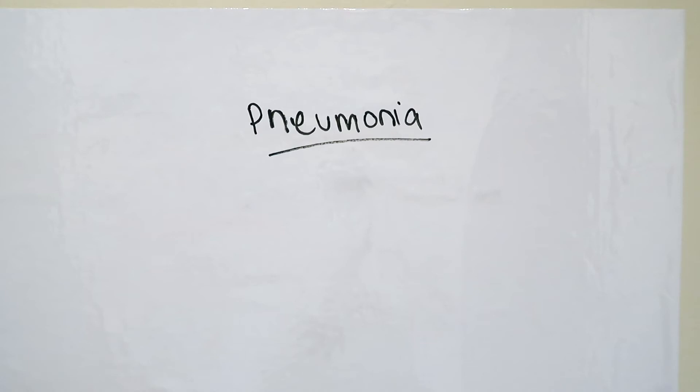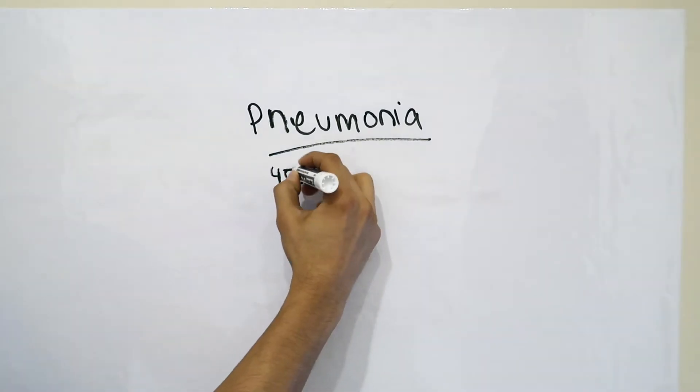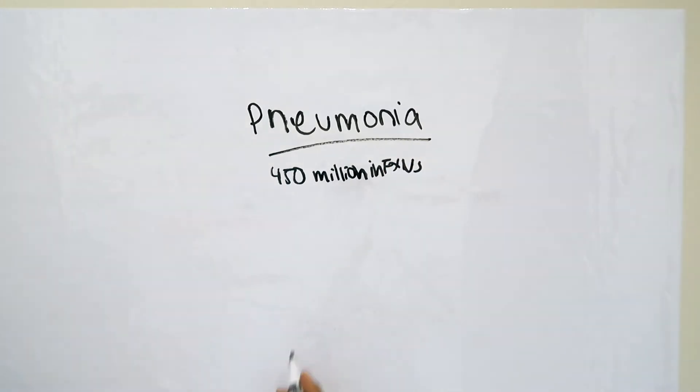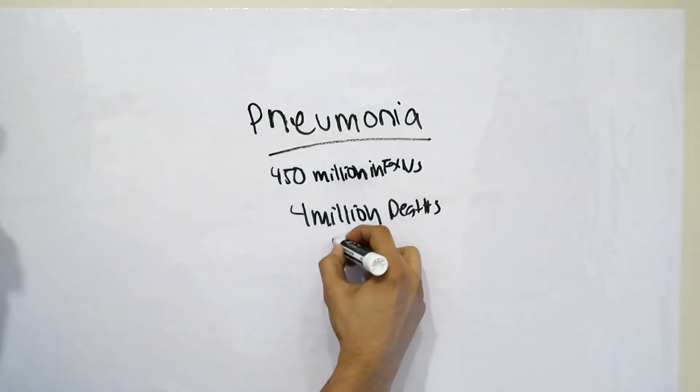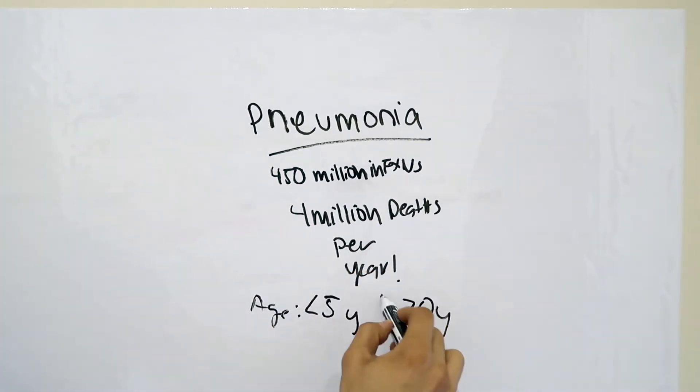Hey guys, I'm Dr. Sharma and we're about to talk about pneumonia. Pneumonia is a common worldwide condition that causes 450 million infections worldwide and up to 4 million deaths each year. Pneumonia infects a wide range of ages, but most commonly infects those under the age of 5 and over the age of 70.